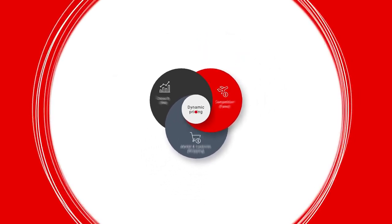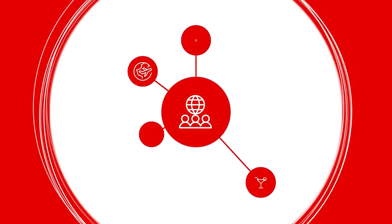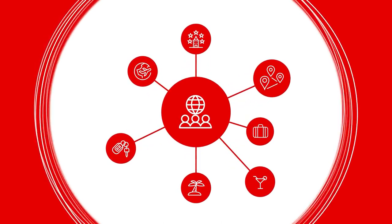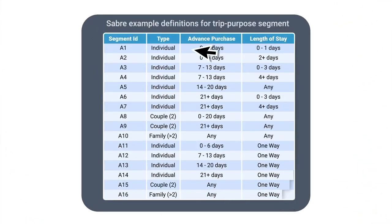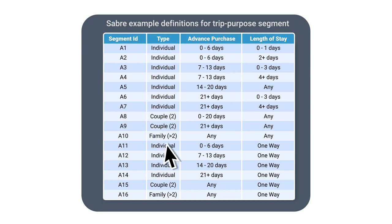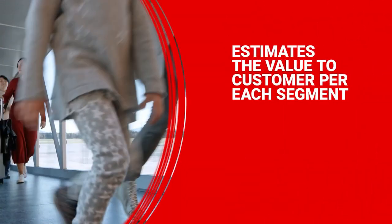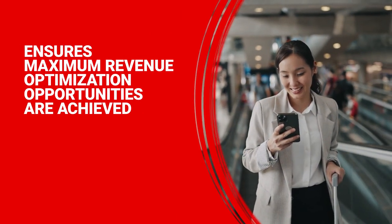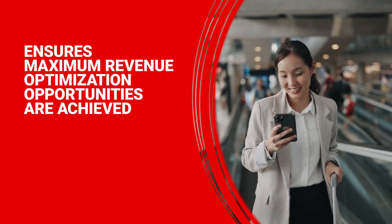The model considers the traveler's segment and trip intent, such as business or leisure travel. It also takes into account factors such as advanced purchase, length of stay, and the number of passengers in the request. Then the model estimates the value to customer per each segment while ensuring maximum revenue optimization opportunities are achieved.